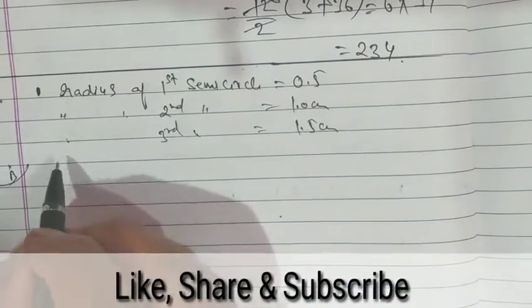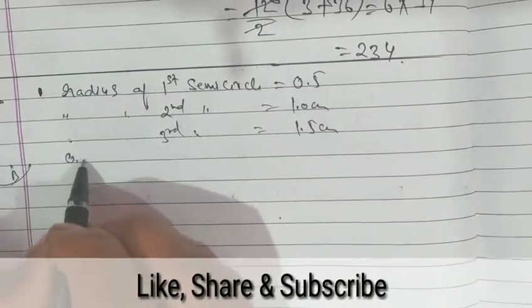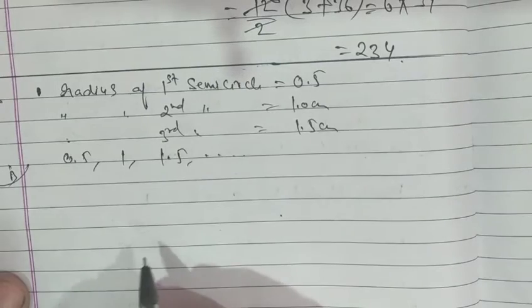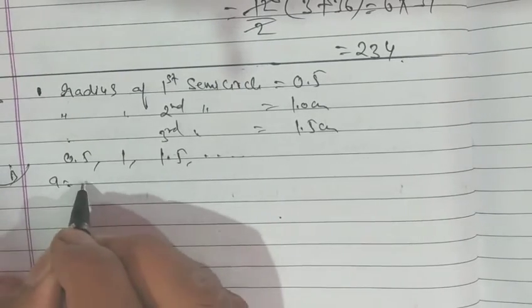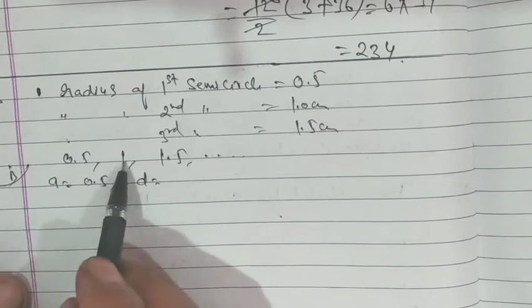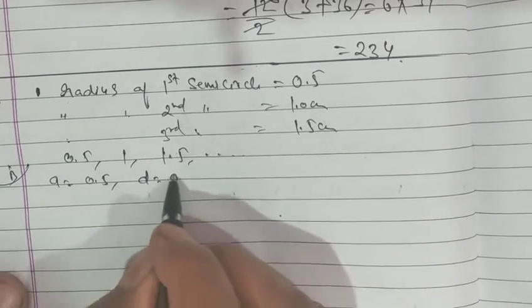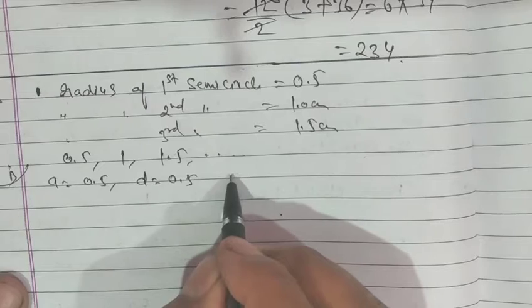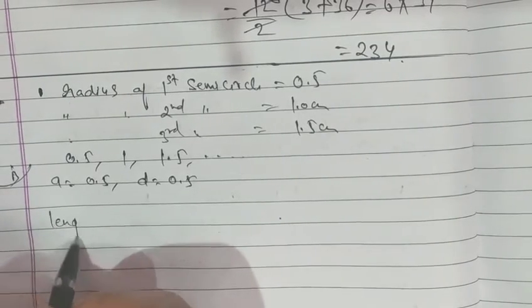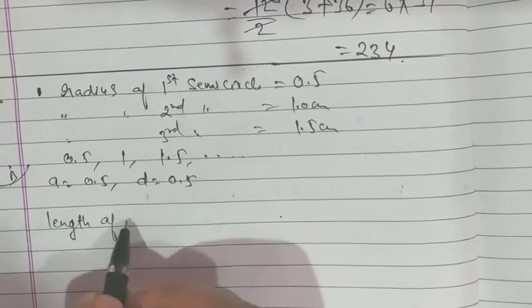So first term, our series becomes 0.5, 1, 1.5, so on. First term a is 0.5, d is second term minus first term, 1 minus 0.5, which is 0.5. We need to find the length of the spiral.